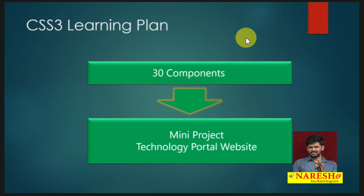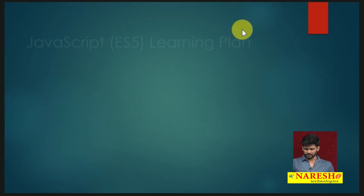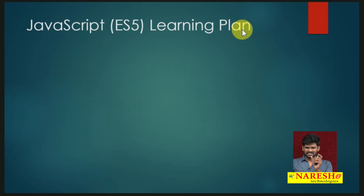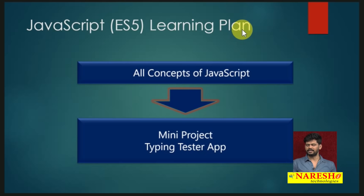And then we start with CSS. CSS also has a learning plan — there are 25 to 30 components. First, we learn all the components: text, colors, fonts, margins, padding, animations, and everything. After that, we build one complete mini project — the technology portal website. Once you have developed the complete project using HTML and CSS, you will become the hero of CSS. Next, we start learning with JavaScript — ECMAScript 5 version. We learn all the concepts of JavaScript, then build one mini project using HTML, CSS, and complete JavaScript: a typing tester app where the timer starts once you start typing.